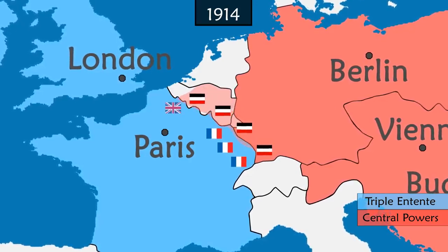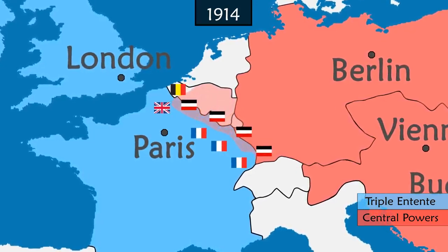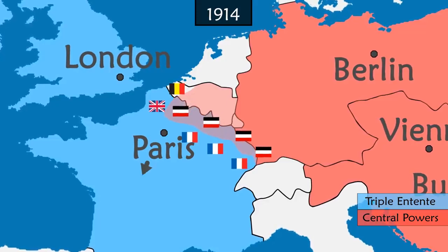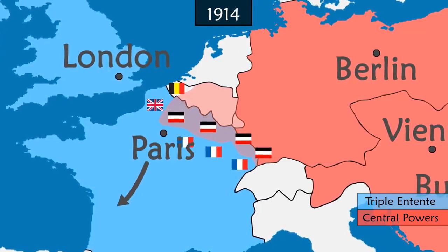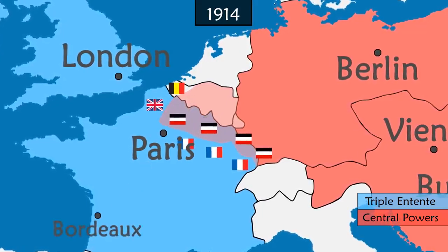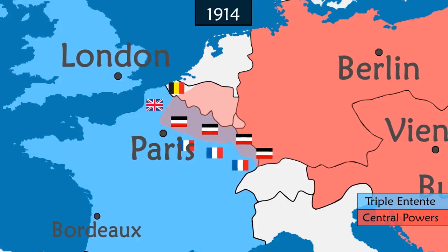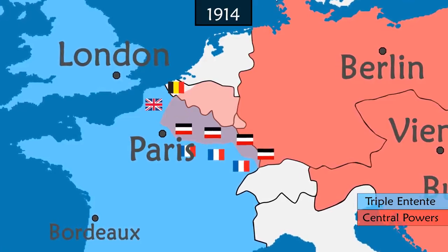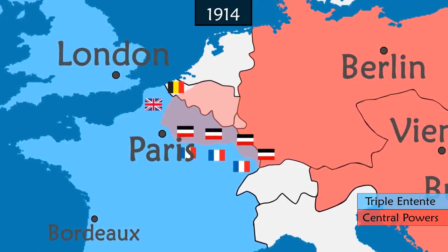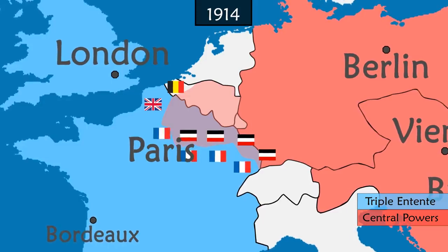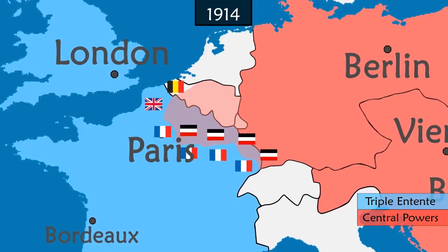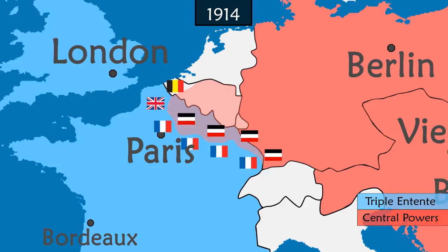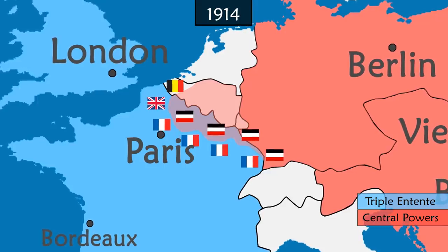The French, British and Belgian armies are forced to retreat. Fearing the capture of Paris, the French government moves to Bordeaux. But the German army turns away from the city to continue surrounding the French army. They are then attacked on the flanks by the army of Paris, which forces them to retreat further north, marking the failure of the Schlieffen Plan.